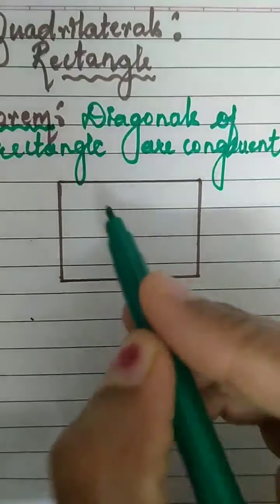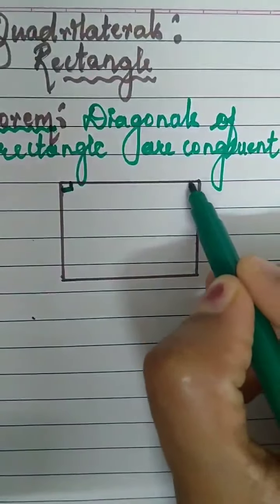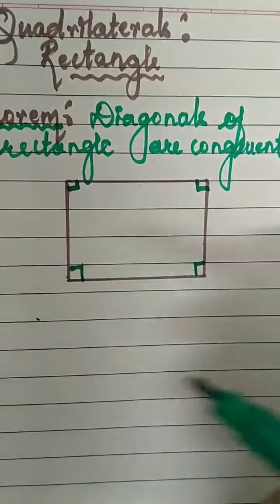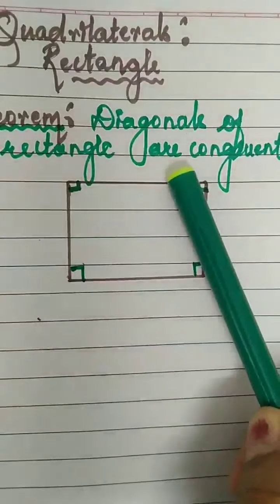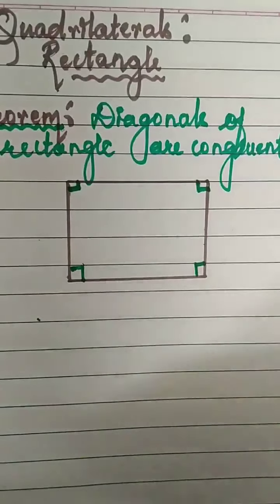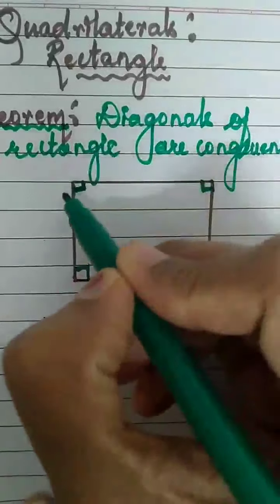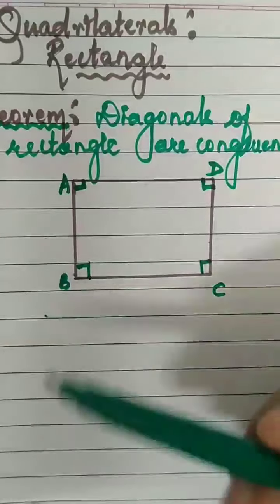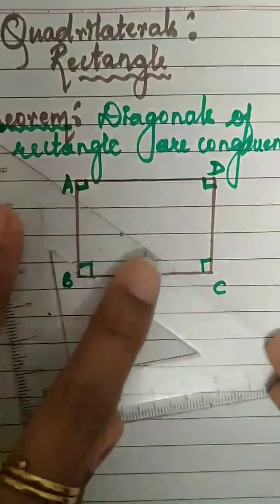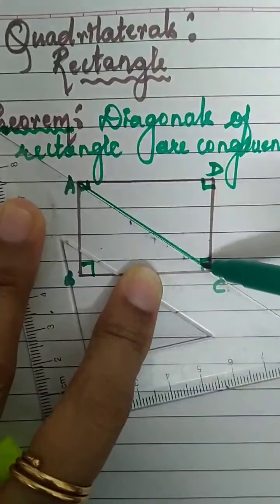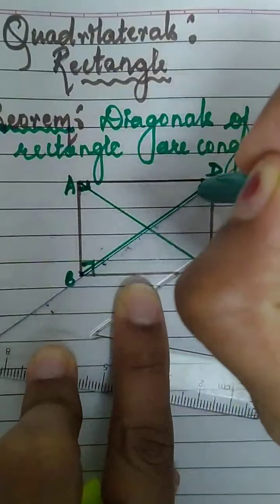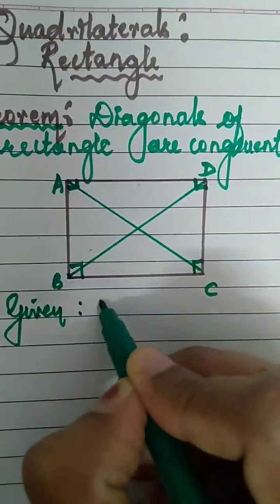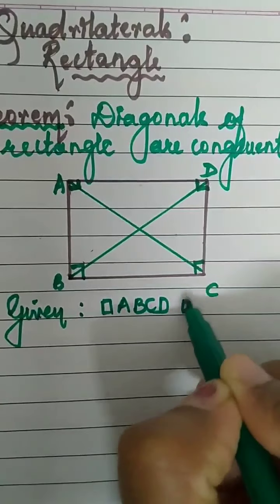I have drawn a quadrilateral. To show that this is a rectangle — a quadrilateral whose all angles are right angles is a rectangle. You have to define a rectangle this way always, not by saying that the opposite sides are congruent; that is a property of rectangle. I have shown a rectangle with all angles 90 degrees. We will name this rectangle as ABCD. Given: quadrilateral ABCD is a rectangle.